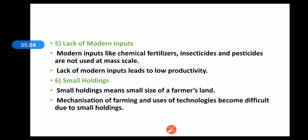Sixth feature is small holdings, which means a small size of a farmer's land. Mechanization of farming and usage of technologies become difficult due to small holdings. Because of the small land, farming doesn't yield much profit, which means technologies and machines cannot be used effectively. This is a big problem for Indian farming, and small holdings is one of the features of Indian agriculture.